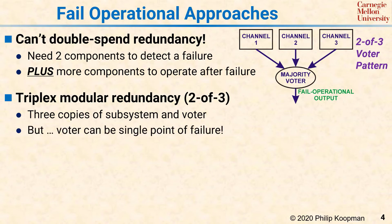However, the voter is a single point of failure because a broken voter can do whatever it wants. Thus, for high-SIL applications such as life-critical applications, you either need to have redundancy inside the voter to ensure the voter itself is reliable, or use some other approach. A key observation is that triplex modular redundancy does not have three components but rather four, and the majority voter is a significant reliability bottleneck for the whole system.